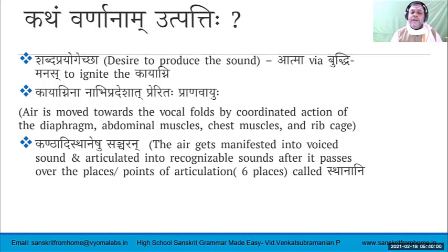The Kayagni will influence the lungs to push air towards the vocal cords. By the coordinated action of the diaphragm, the abdominal muscles, the chest muscles, and the ribcage, the air passes through the vocal cords and converts into voiced sound, and it gets articulated into recognizable sounds after it passes over the points of articulation.